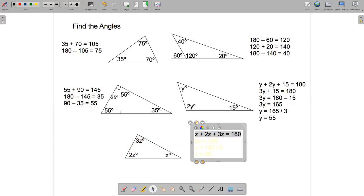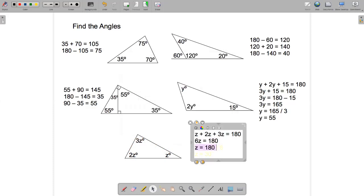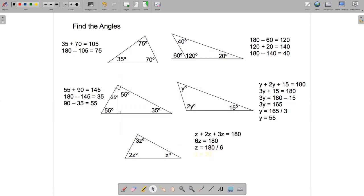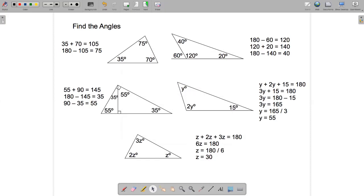So that's 6z in total. And if 6z is 180, then z is 180 divided by 6. And that comes to 30. Sorry, 180 divided by 6 is 30. If I can do my math. And again, you could check, z is 30, 2z is 60, 3z is 90. This is actually a right angle. And 30 plus 60 plus 90 is 180.